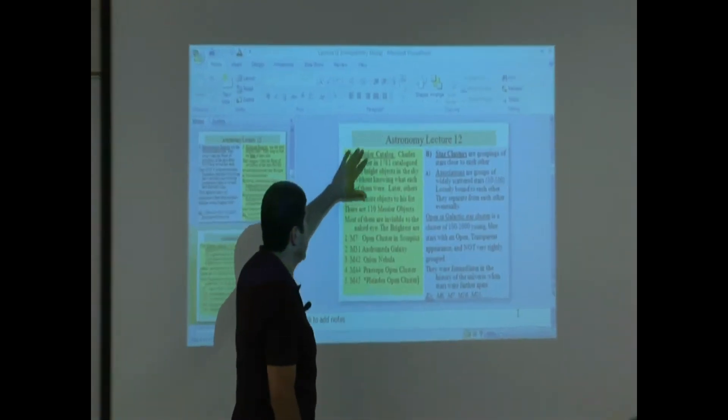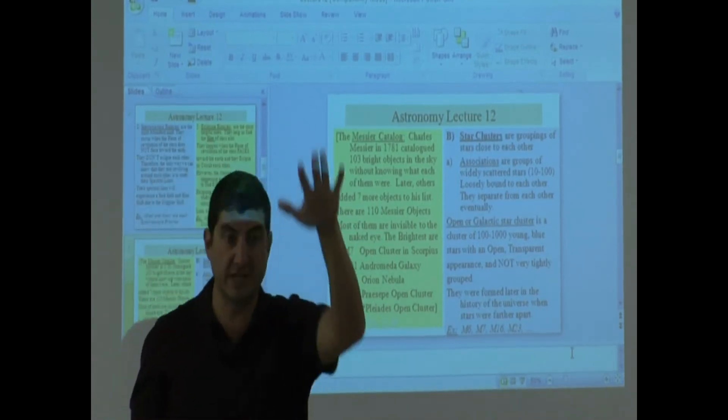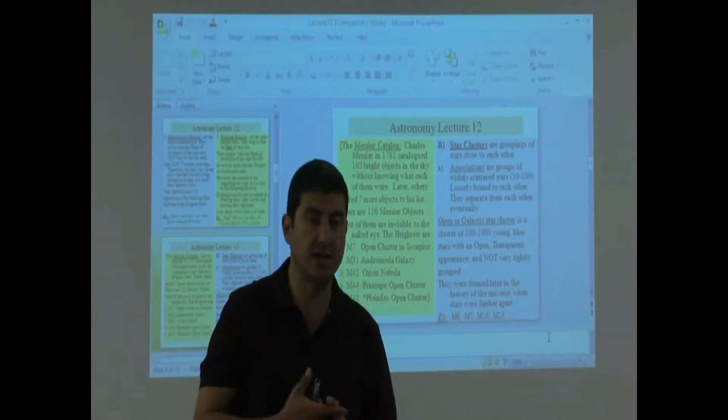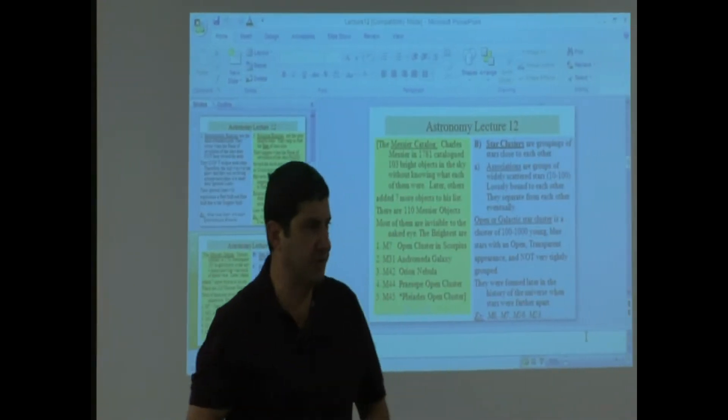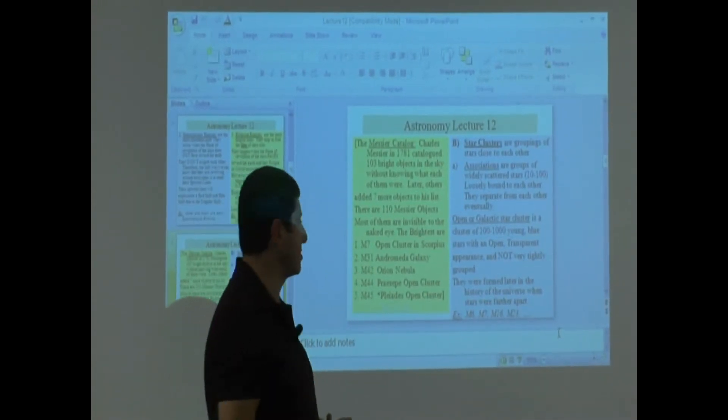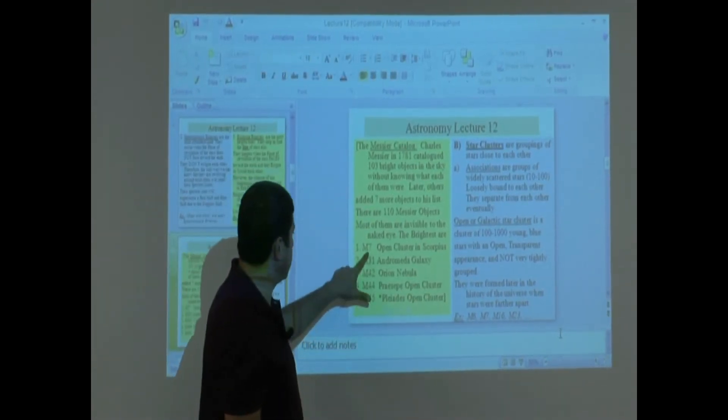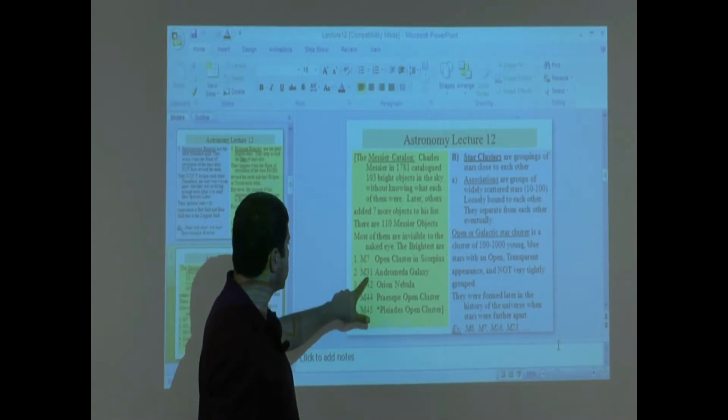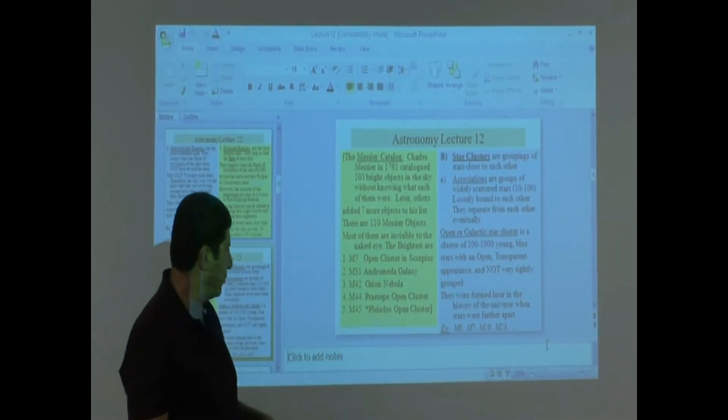Last time we left off we talked about the Messier catalog and then we looked through it. We noticed what kind of objects the Messier catalog had. It had things that were galaxies, some of the objects there were star clusters, and some of them were gases. We noticed that these were some of the bright ones in there: M7, M31, M42, M44, M45.